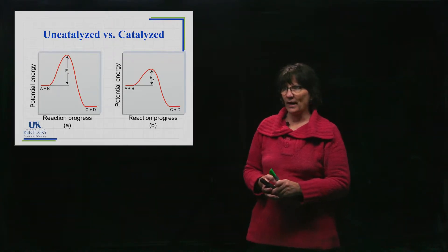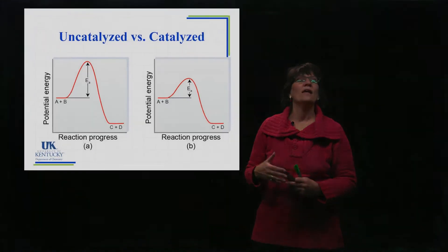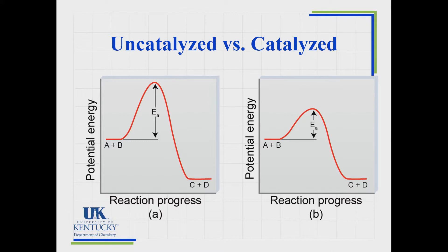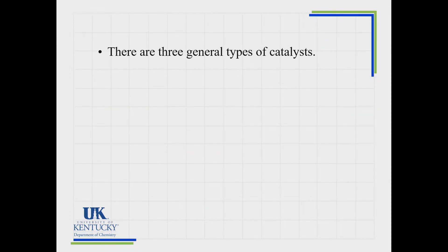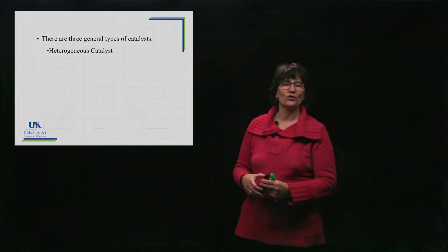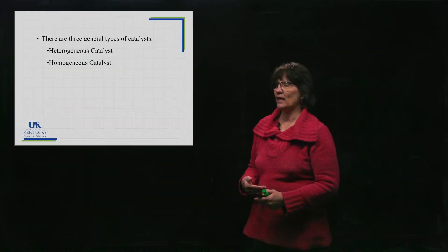Here are examples of an energy diagram. On the left we see the uncatalyzed form - the activation energy is tall. When you add the catalyst we see a lower activation energy. Now the delta H is the same either way, because delta H is just the enthalpy change from reactants to products. So that's not changing, but the mountain that has to be climbed from reactants to products is different for the catalyzed versus the uncatalyzed reaction.